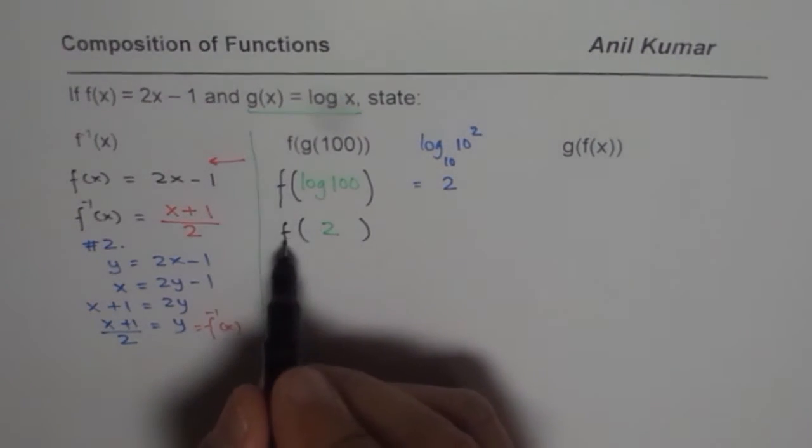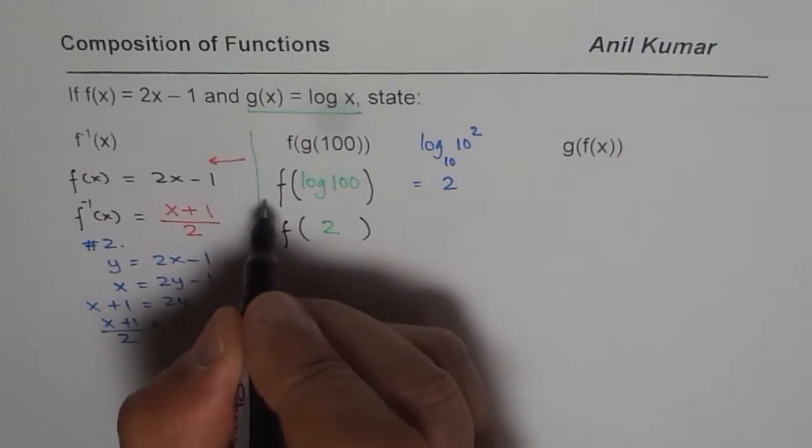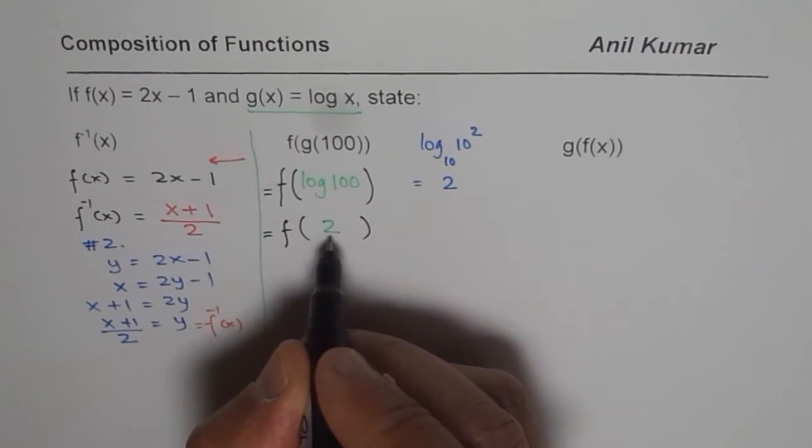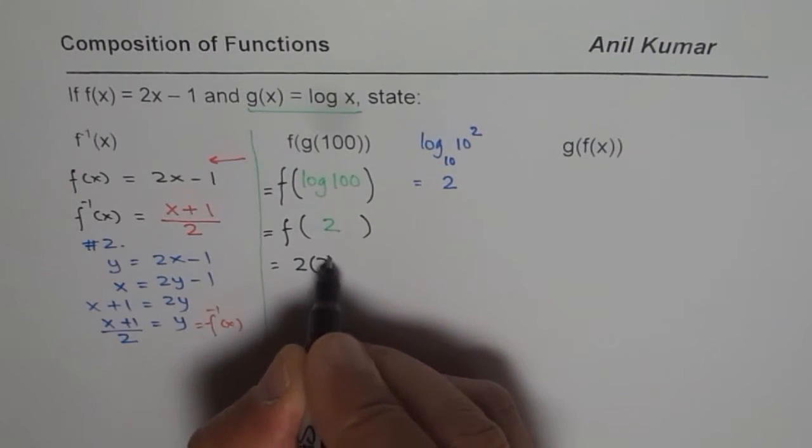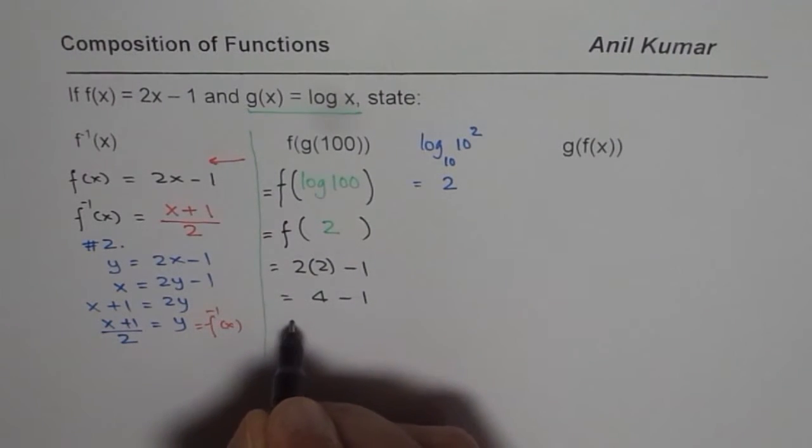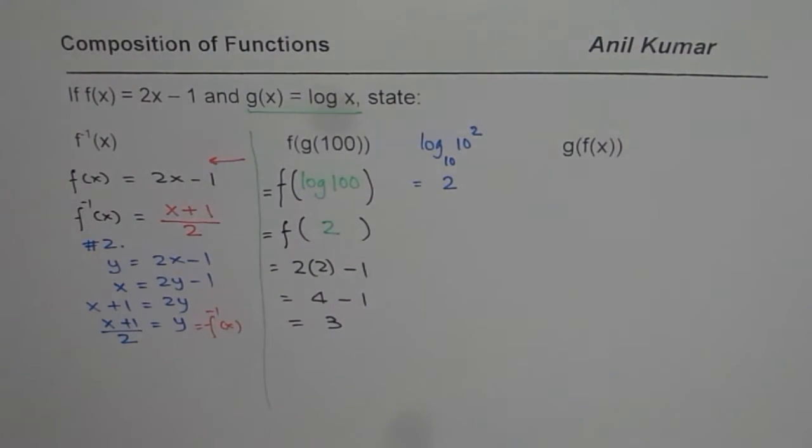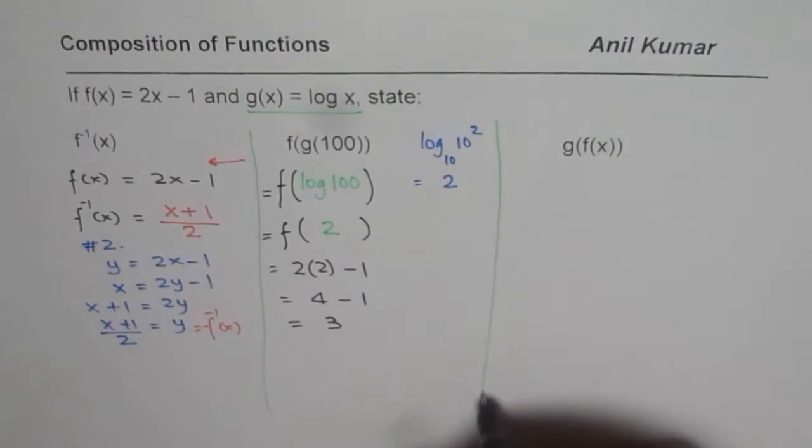Now, let us calculate f of 2. f of x is 2x minus 1. What do we get? We will replace x with 2 here. And we will get 2 times 2 minus 1. And that is 4 minus 1. And that is equals to 3.